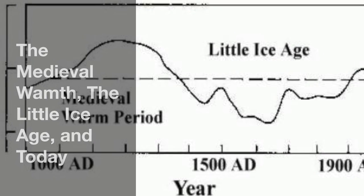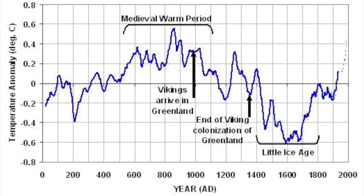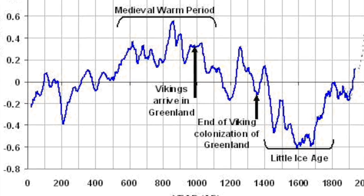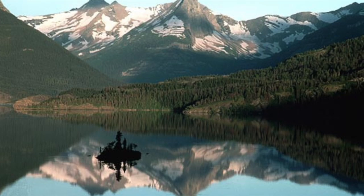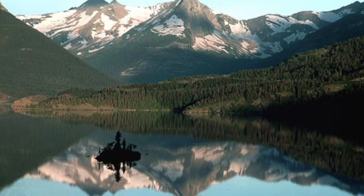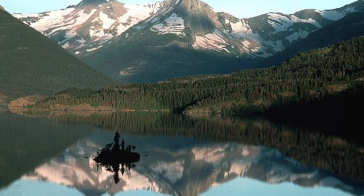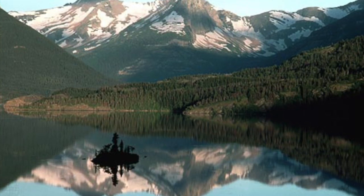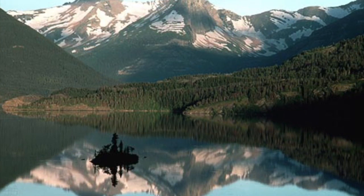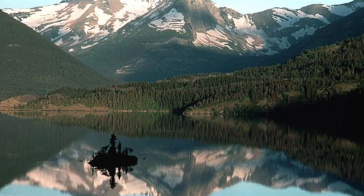The Medieval Warm Period was a time stretching between the 9th to the 13th century, which experienced warmer than usual temperatures. A few centuries later, the Earth experienced what is known as the Little Ice Age. This period was noted by cooler than average temperatures, which extended from the 15th century until about the 19th century, where temperatures have begun to rise until the present.